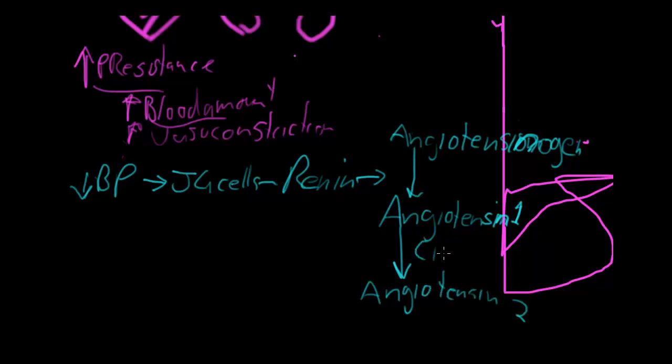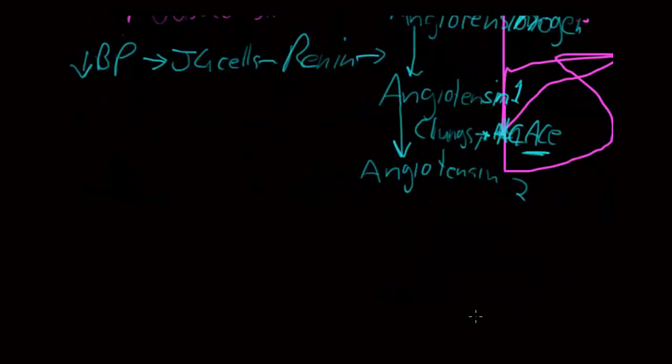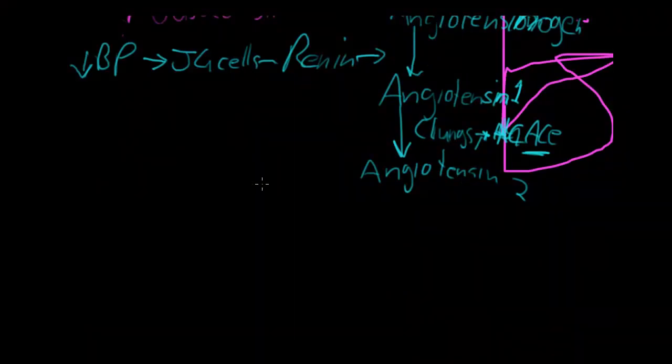And angiotensin 1 converts to angiotensin 2. This is largely done in the lungs by ACE. Yeah, I had a bit of a technical issue over here. So, that's normally done there by ACE, which is what the ACE inhibitors get rid of. Or inhibitors I should say. So, what does angiotensin 2 do?